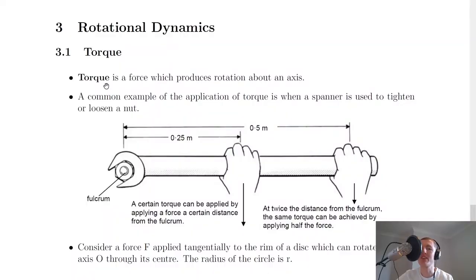We've got a definition of torque here which says that torque is a force which produces rotation about an axis. When we're applying a force at a certain distance away from something and the object is going to rotate, that means we've got a torque.